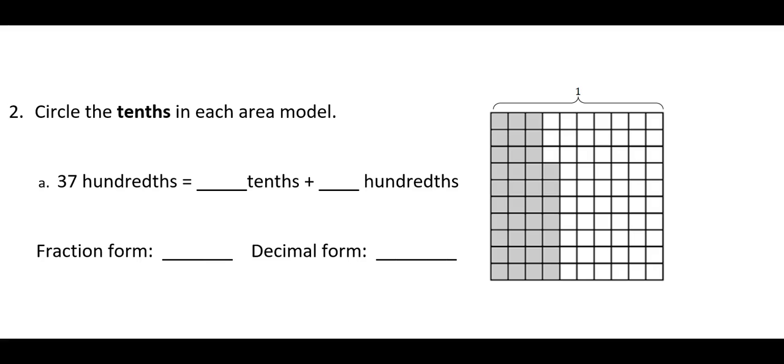In this question, I have a fraction model that shows 37 hundredths shaded in. The directions say to circle the tenths. So the tenths would be any complete column that has been shaded in. So let's go over here, and I see that I have 3 complete columns. That means I have 3 tenths, and in my partially filled column, I have 7 hundredths.